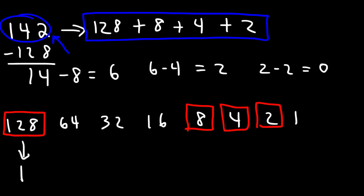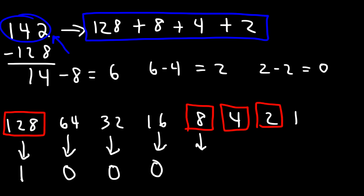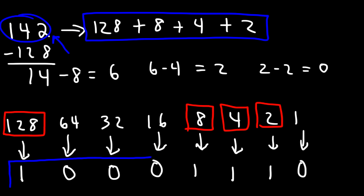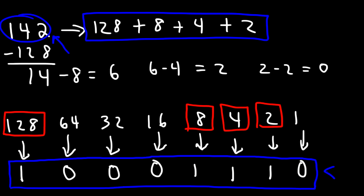So this is going to be 1. We don't have a 64, nor do we have a 32 or a 16. We do have an 8, a 4, and a 2. And we don't have a 1. So 142 is basically 10001110. And so that's how you can convert a decimal number into a binary number.